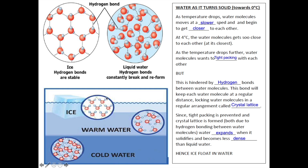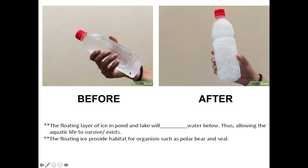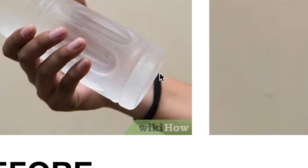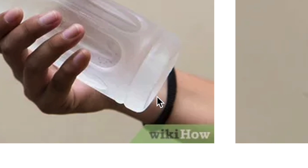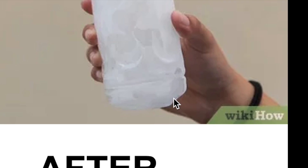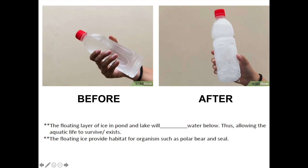That is why when you place solid water or ice in liquid water, solid water floats. This is evidence that water expands when it solidifies. This picture shows water before and after it solidifies — it expands. You can confirm this by looking at the bottom of the bottle: while the water is still liquid, the bottom of the bottle holds its shape, but as the water freezes, the bottom of the bottle loses its shape and comes out, showing that water expands as it solidifies.